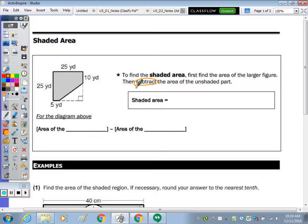The larger figure is the outside figure. So let's write it as the area of the outside minus the area of the inside, or the unshaded part.